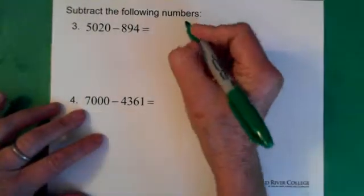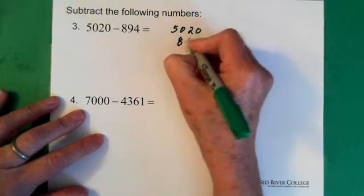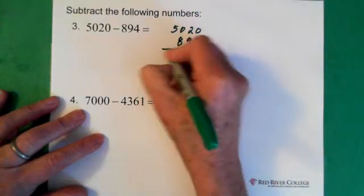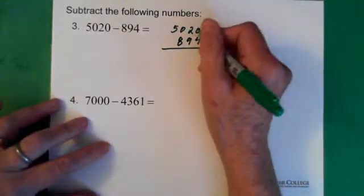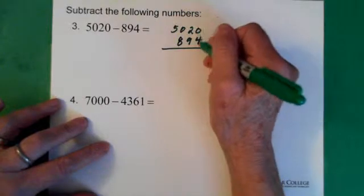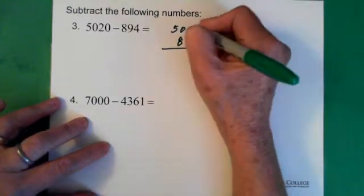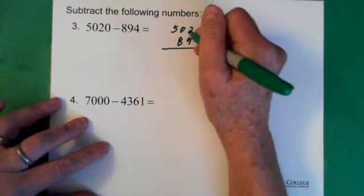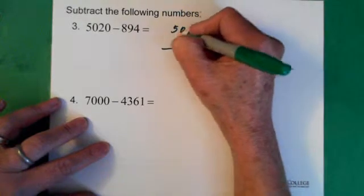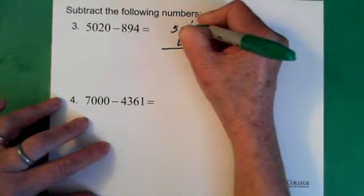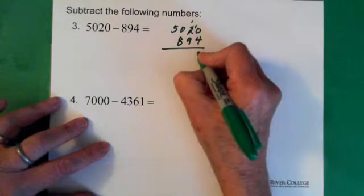Here we have 5,020 minus 894. In this situation, what we do is we start again on our left here. We see that we have a 0 minus 4, which we can't subtract. So we borrow from the 2. Don't forget this is a 20, essentially. So we're taking 10 out of the 20. This becomes a 1, and that other 10 moves over here. Now we have 10 minus 4, which is 6.